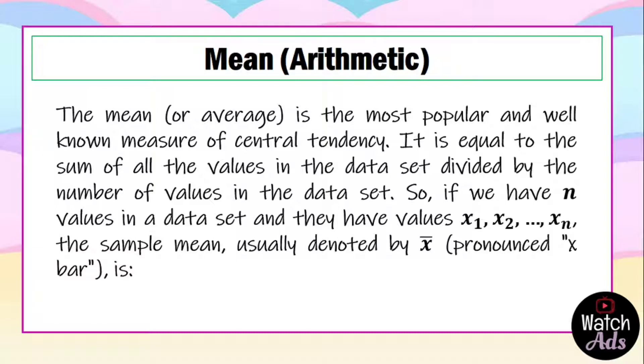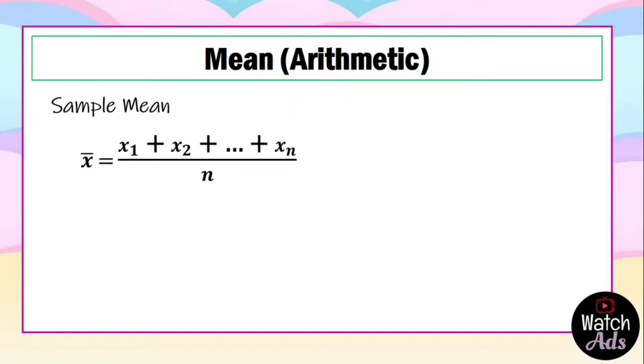So if we have n values in a data set and they have values x₁, x₂, and so forth, the sample mean, usually denoted by x̄, is equal to x₁ + x₂ + x₃ and so on, all over n. Or x̄ is equal to the summation of x over n. For population mean, only the symbol for mean changes, but we will follow this same procedure.